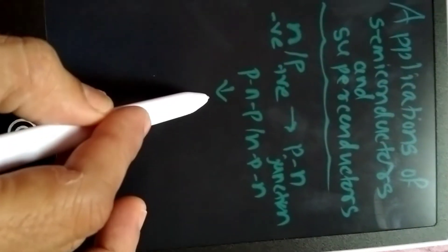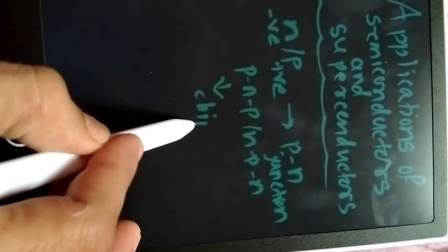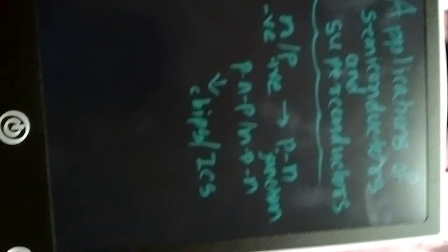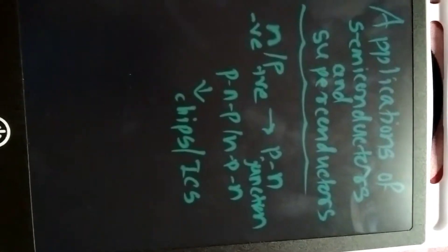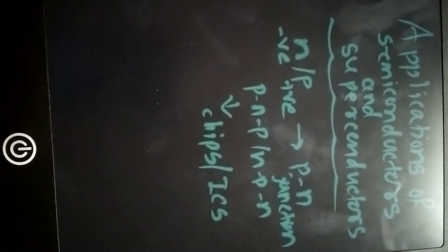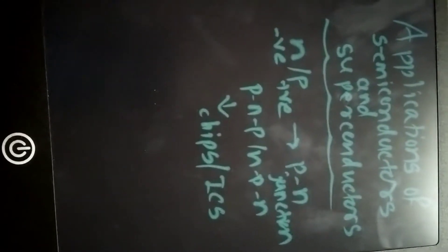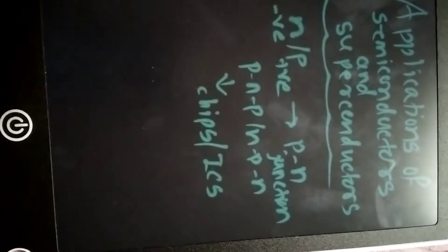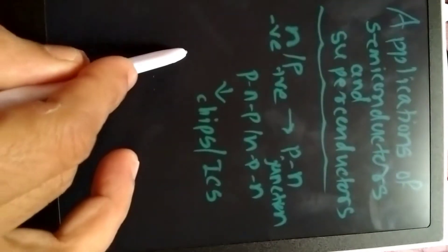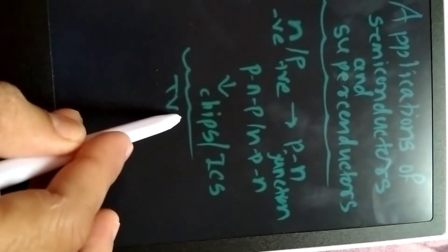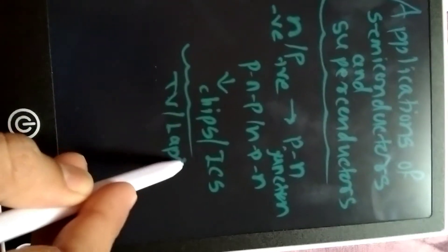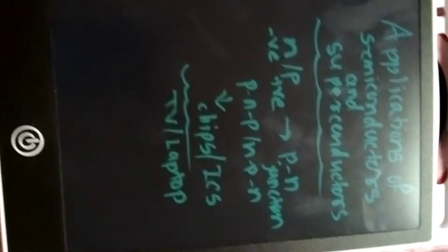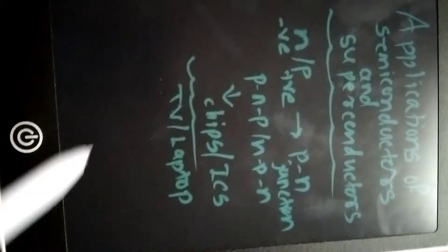These are used in electronic chips, ICs, and electronic gadgets like laptops, television screens, light emitting diodes, and LEDs. They are also used in TVs, mobiles, computers, and laptops — these types of electronic devices.